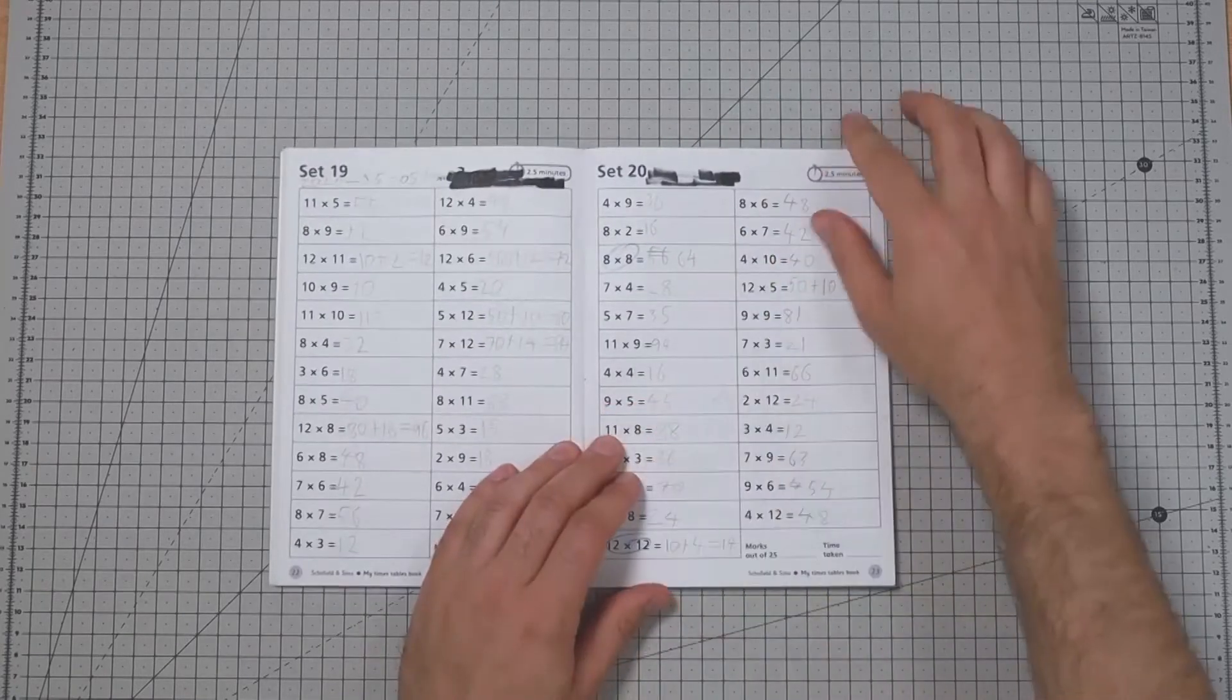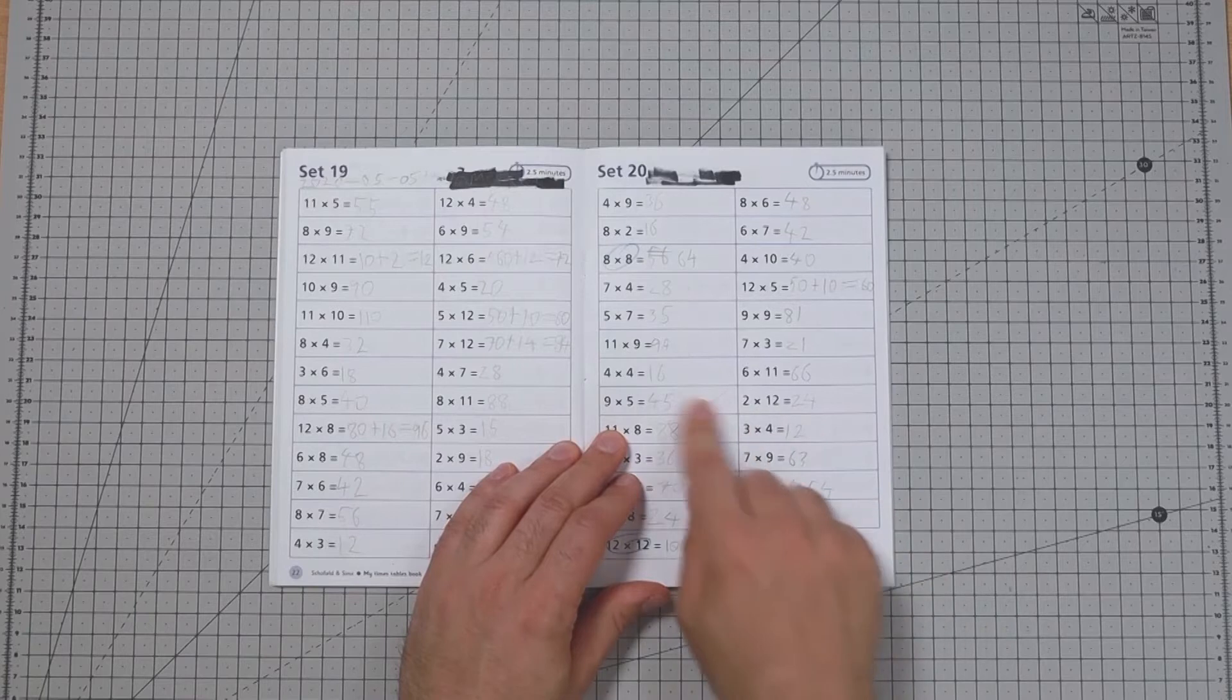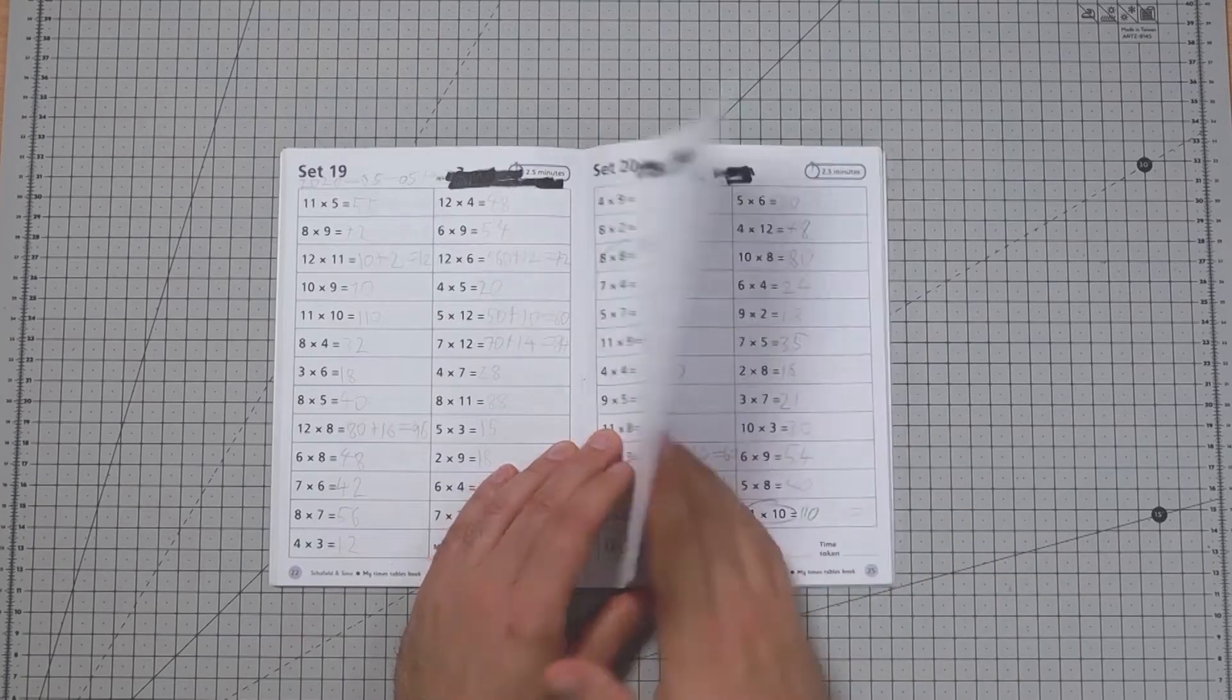It repeats and repeats and repeats. One thing to watch out for, it's multiplication up to 12 times the table.